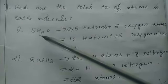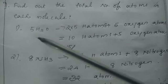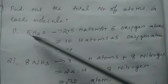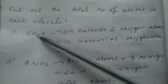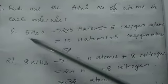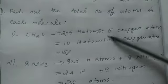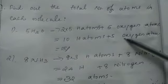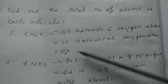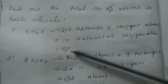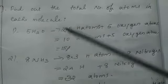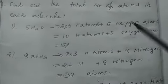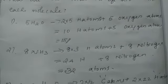So 5 into 2 H plus 5 oxygen atoms. That is 10 hydrogen atoms plus 5 oxygen atoms, that is 10 plus 5, 15 atoms are there in 5 H2O molecule. This is very important. You should learn how to find out the total number of atoms. Surely it will come for the exam.